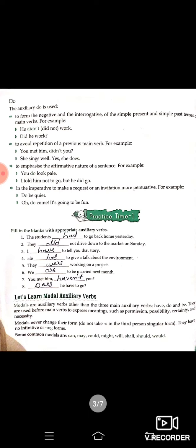Next: the auxiliary 'Do.' It is used to form negatives and interrogatives in the simple present and simple past tenses of main verbs — for example, 'He didn't work,' 'Did he work?' It is also used to avoid repetition of a previous main verb — for example, 'You met him, didn't you? She sings well. Yes, she does.' And to emphasize the affirmative: 'I told him not to go, but he did go.'